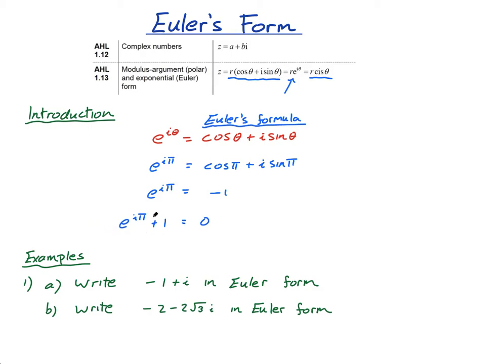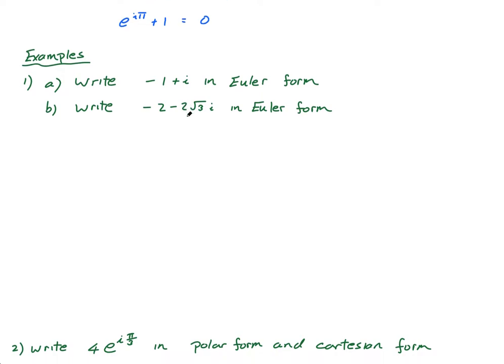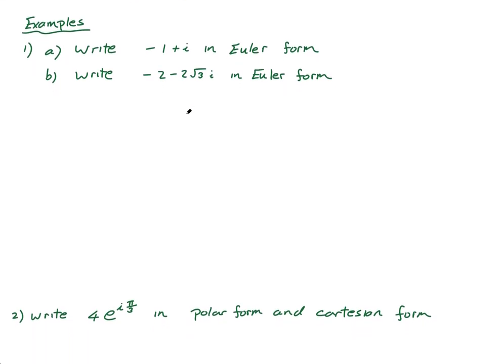Anyway, this is a thing, and this leads us to simply changing — instead of writing cos θ + i sin θ, we just have e^(iθ). So once I find r and θ, I have Euler's form. Let's write some things in Euler's form.